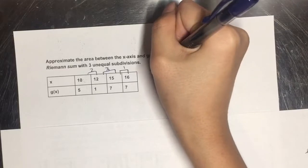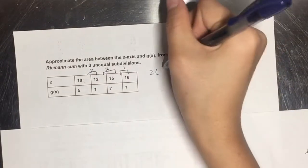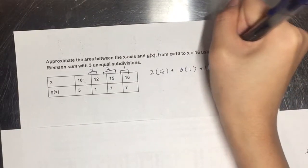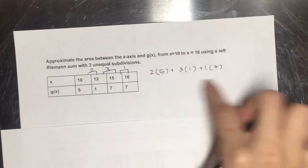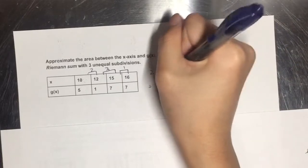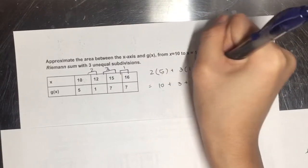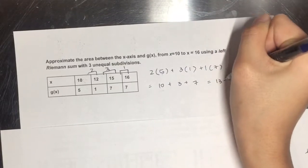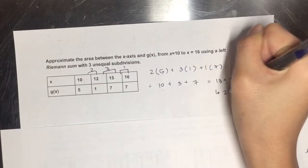Since we're doing LRAM, we've got to look at the value to the left. So for 2, we're doing 5. For 3, we're doing 1. And for 1, we're doing 7. You can just leave it like this. You don't have to simplify on the AP test. But if you want to simplify, you're just going to add it up and it ends up being 20.